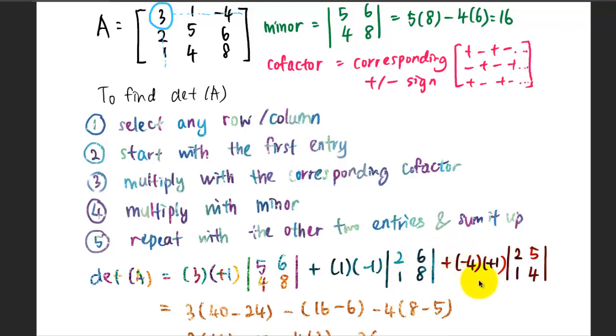The last entry will be negative 4. So I write negative 4 here and the associated cofactor sign is positive, so I multiply it with positive 1. The corresponding minor will be, so this is the entry here, negative 4. I'm going to cover 6 and 8 and cover 1 and 3. The leftover matrix is [2, 5; 1, 4]. That's why the minor will be the determinant of 2, 5, 1, 4.